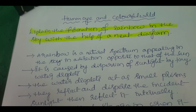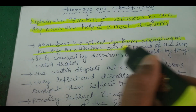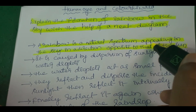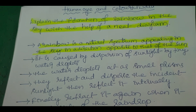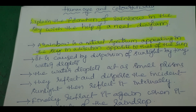So let's write rainbow in simple sentences. A rainbow is a natural spectrum appearing in the sky in a direction opposite to the sun. When it rains and the sun is in the east, the rainbow appears in the west side of the sky. Similarly if the sun is in the west, the rainbow appears in the east side. When it is raining in the presence of sunlight, there is a chance of formation of a rainbow opposite to the position of the sun.